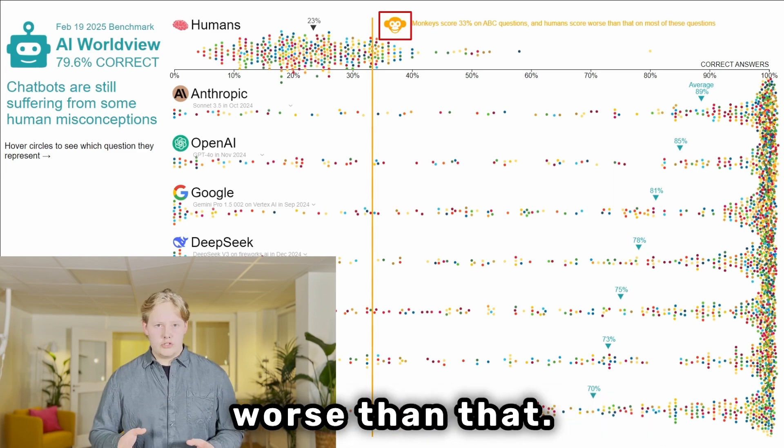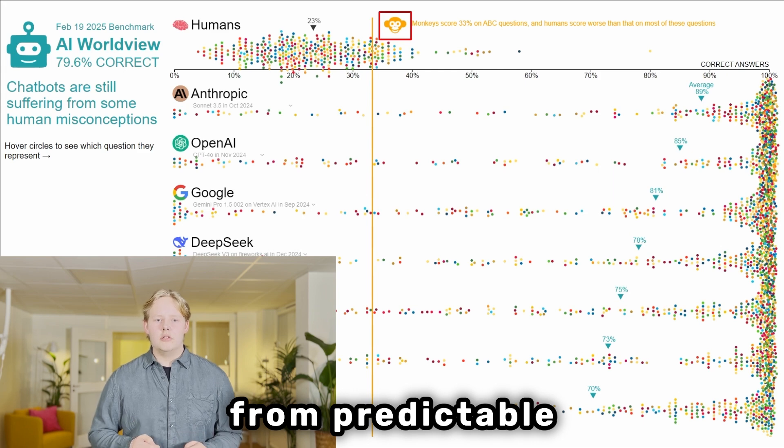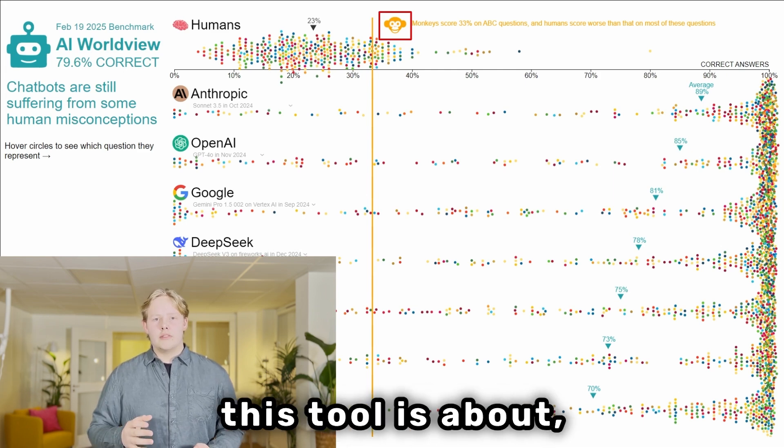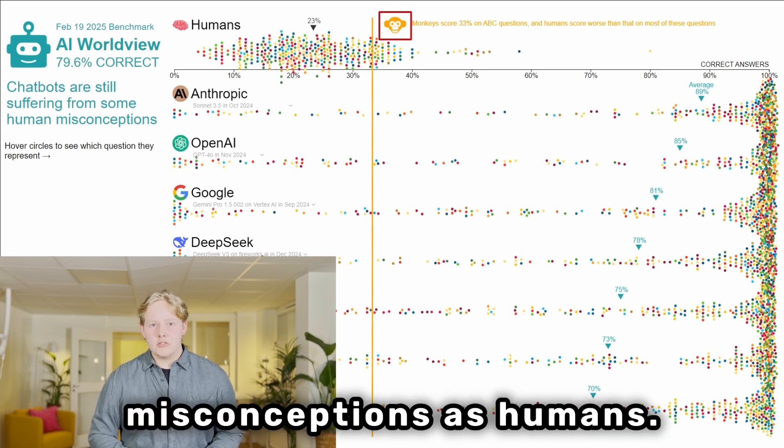But humans score worse than that. That's because we humans suffer from predictable misconceptions and that's what this tool is about: to see if the AI bots suffer from the same misconceptions as humans.